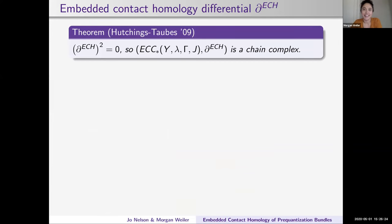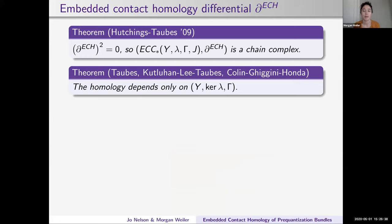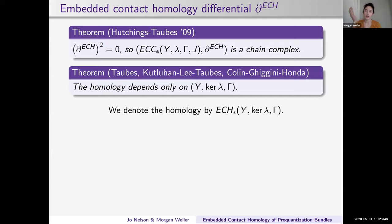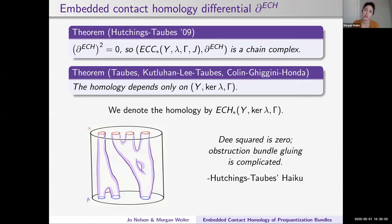One thing to be worried about is that this count is finite and that you can actually get your hands on the moduli space. We restrict to the dimension one part of the moduli space of such currents between alpha and beta, which coincides with ECH index one when alpha and beta have ECH index difference one. Once we have this differential, Hutchings and Taubes proved that it squares to zero, so we do have a chain complex. Many people proved that the homology doesn't depend on J and doesn't depend on the contact form—just on the first Chern class of the contact structure.